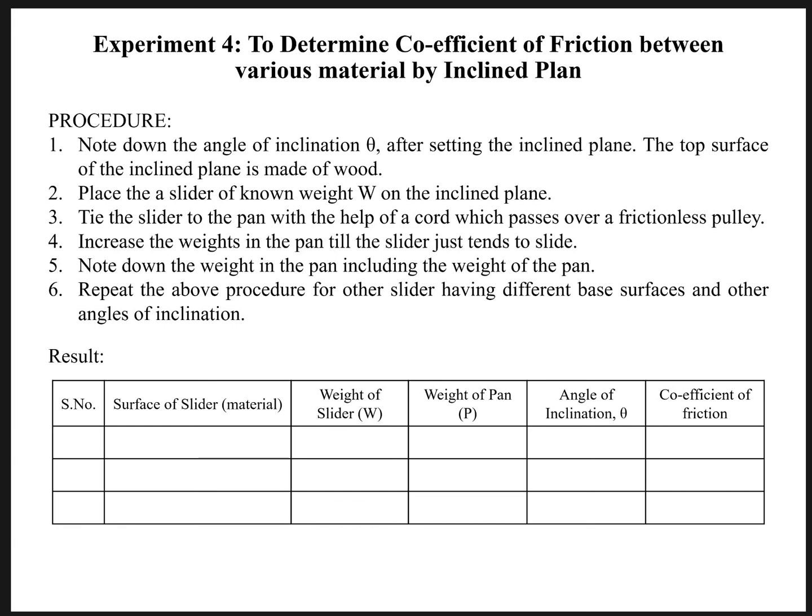These are the steps you'll be following. First you have to note down the angle of inclination after setting the inclined plane. The top surface of the inclined plane is made of wood. Number second says place a slider of known weight W on the inclined plane and tie the slider to the pan with the help of a cord which passes over a frictionless pulley.